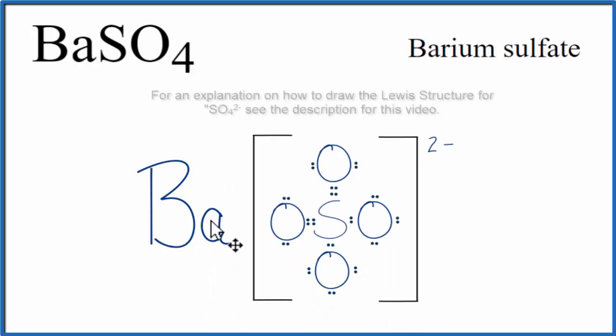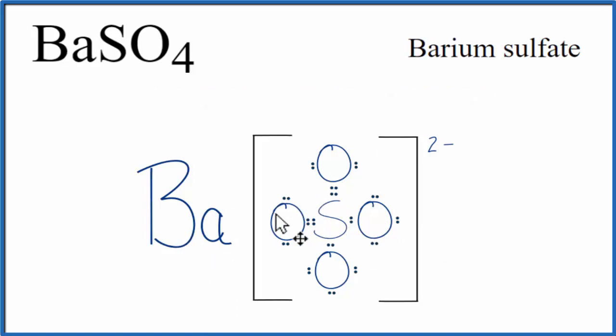We said that barium's a metal and the sulfate ion is a group of non-metals, so the barium will transfer its valence electrons to the non-metals. Barium on the periodic table is in group 2, so it has two valence electrons. So it transfers both of those valence electrons to the SO4, so it lost two electrons.